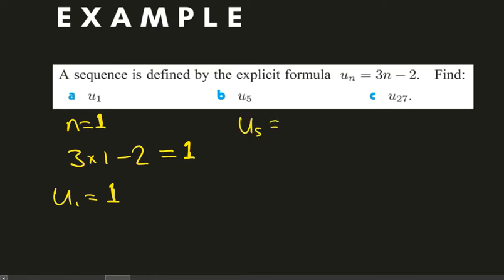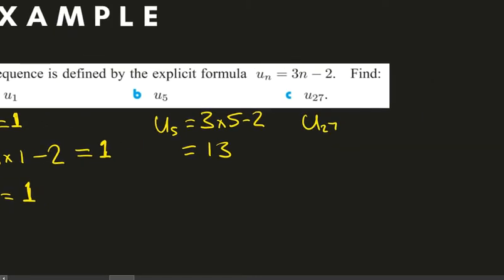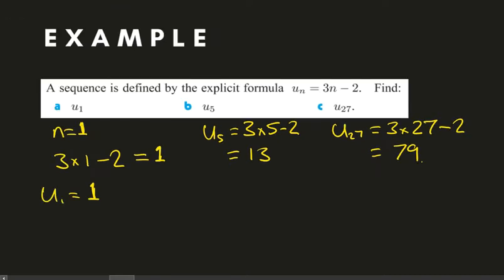U5, well, that will be the fifth number in the list, 3 times 5 minus 2, and that's going to be 13. And then, of course, U27, the 27th number in the list, that's going to be 3 times 27 minus 2, which is 79.